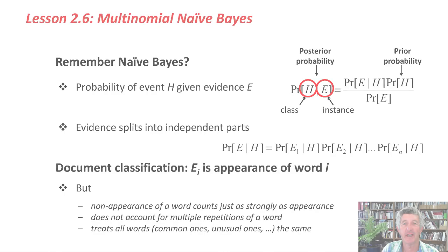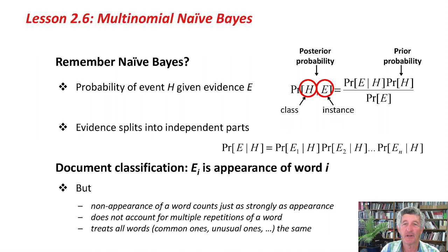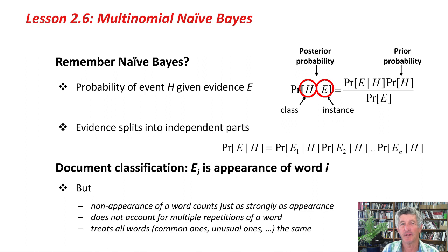I'd like you to recall the Naive Bayes classifier. We talk about the probability of the event H — that is, the probability of a particular class given evidence E — that is, a particular set of attribute values for an instance. Naive Bayes updates the prior probability of H without knowing anything about the instance. So in the weather data, I think there are 9 play instances and 5 don't play instances, so the prior probability of play is 9 over 14, without knowing anything about the instance. Naive Bayes updates that with information about the instance, that is, the attribute values, to get the probability of H, the class, given the instance.